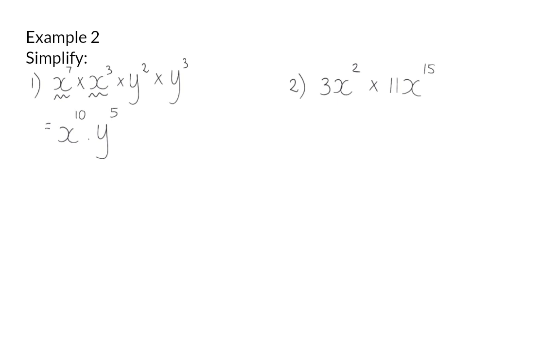In number 2, it is now important to distinguish between those values that are straightforward constants and those that are written in exponential form. For our two constants, we are straightforward going to multiply them, and 3 times 11 is 33. For our variables, which are in exponential form, we can use the exponential law and add the two exponents. So here we'll have x to the power of 17.